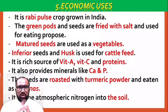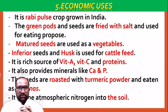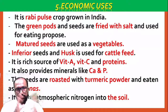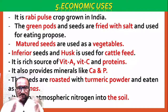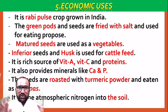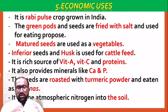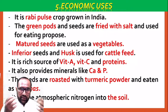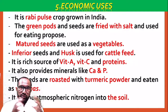Pea is a rabbi pulse crop grown in India. The green parts and seeds are fried with salt and used for eating purposes. The seeds are also used as a vegetable.